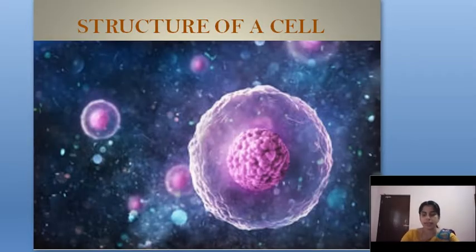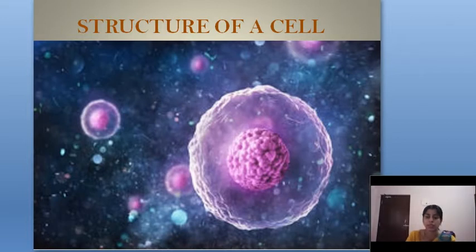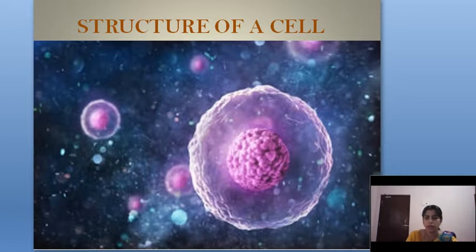Hi students, welcome back to the class. Last class we discussed about the size and shape of the cell, and prokaryotic and eukaryotic cells. You know about the cell — cell is a fundamental structural and functional unit of all living organisms. You also know the size of the cell: 3 micrometer to 30 micrometer is the average size. The shape of the cell varies depending upon the function.